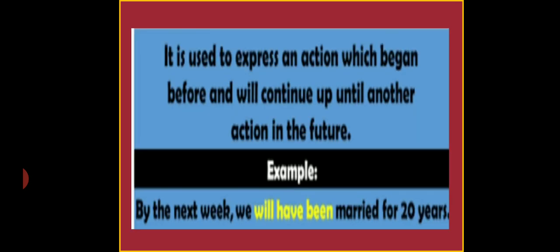Next, it is used to express an action which began before and will continue up — aur tab tak chal raha hoga jab tak future mein koi doosra action hoga. For example: by next week, we will have been married for 20 years. Woh 20 years seh married hain, lekin next week unka 20 years jo married life ka hai woh time period pura ho chuka hoga.